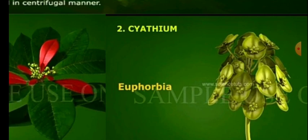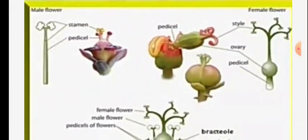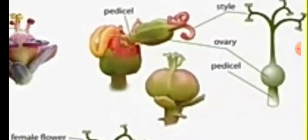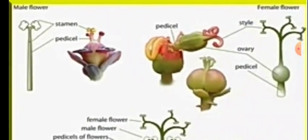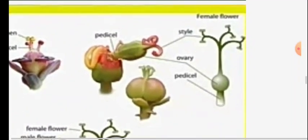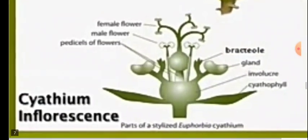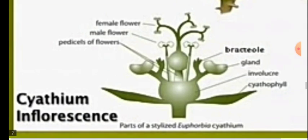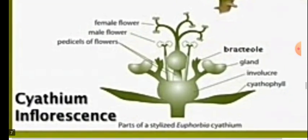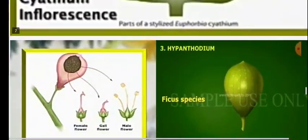Euphorbia is another example. See the positions of the male and female flowers. This is a good photograph — this is the involucral bract and the yellow nectary is visible. The ovary is observed outside the flower. The female flower shows branched styles — branched style is the characteristic feature of Cyathium inflorescence. The bracteal involucre is present.